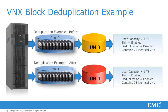Let's view an example of what VNX block deduplication can do. On my VNX array, I have two pools with the exact same configuration. Each pool contains a 1TB LUN, one that has deduplication disabled and is thin, and one with deduplication enabled. Both LUNs contain the exact same 25 virtual desktops that my marketing group wanted for a project.